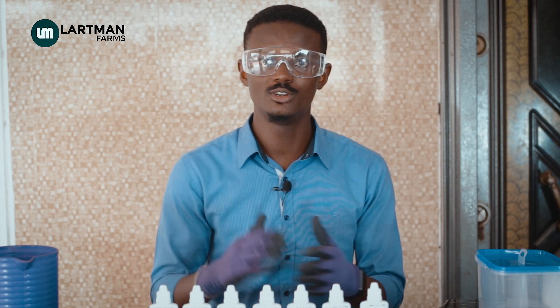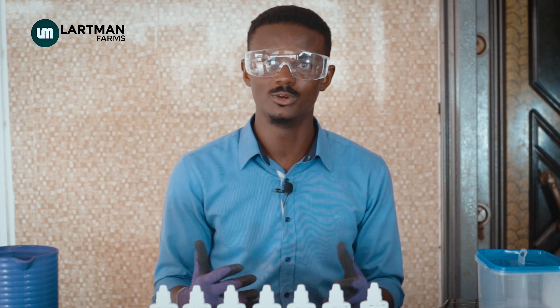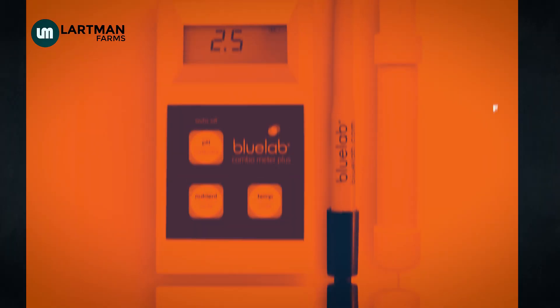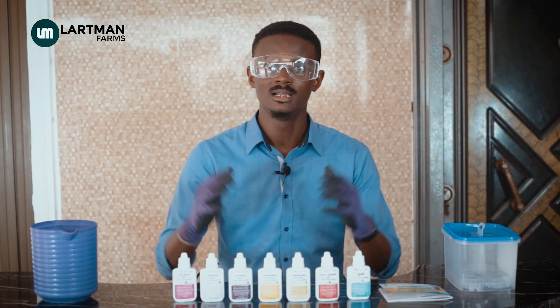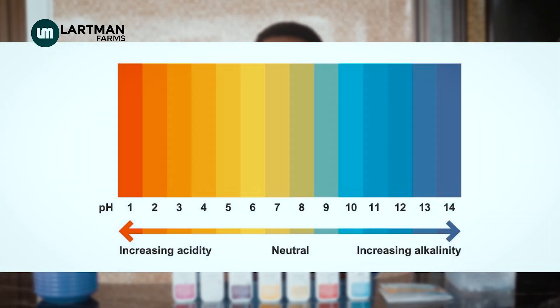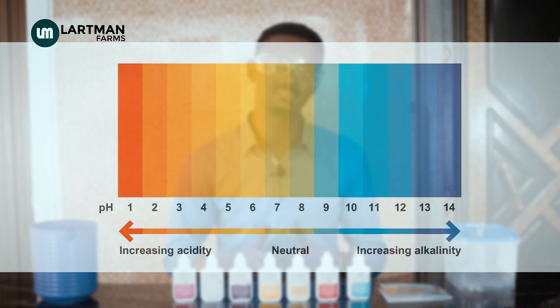For testing temperature and dissolved oxygen, there are digital testers available, like the Bluelab tester, which can serve the purpose for you. Now, the next thing we look out for is pH — the power of hydrogen in the water. From 1 to 7, a system is acidic. From 7 to 8, it is neutral. From 8 to 14, it is alkaline.